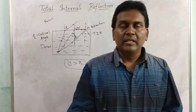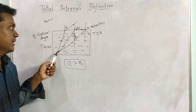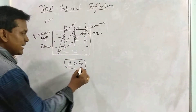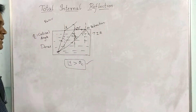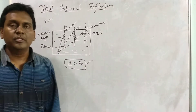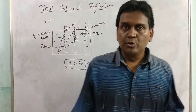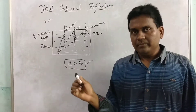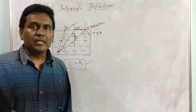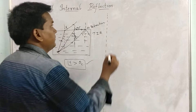For total internal reflection, there are two conditions: first, the ray must travel from an optically denser medium towards a rarer medium; second, the angle of incidence must be greater than the critical angle. Only when both conditions are met does total internal reflection take place. There are many consequences of total internal reflection.